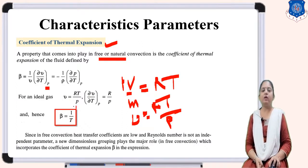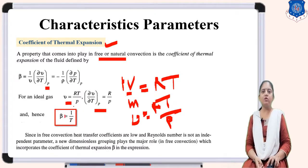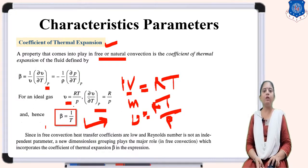Small v equals RT upon P, so dv by dT at constant pressure equals R upon P. Substituting into the beta formula: beta equals P upon RT into R upon P. The R's and P's cancel, so beta equals 1 upon T. Therefore, the coefficient of thermal expansion beta is inversely proportional to temperature, and plays a role in natural convection.